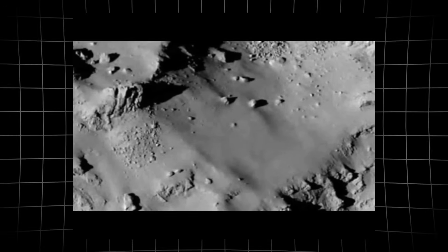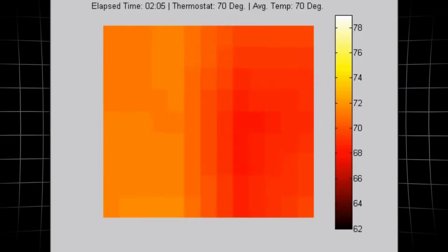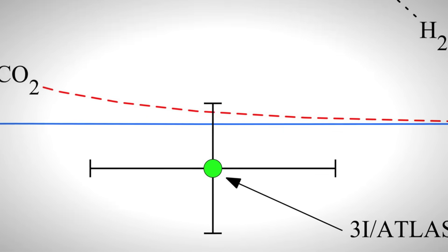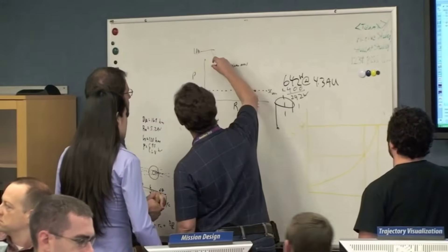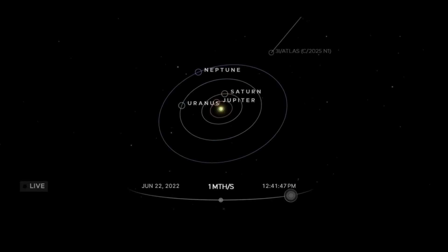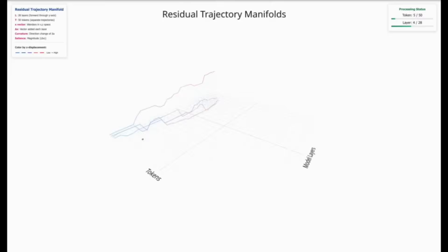In standard comet physics, non-gravitational forces like outgassing fade quickly as a comet recedes from the sun, breaking that ratio. Here, the proportionality holds. The data demand an explanation that goes beyond what images alone can show. For the Jet Propulsion Laboratory team, this is not just a curiosity. The persistence of the outward acceleration and its precise inverse square dependence forces them to consider models outside the usual playbook. The numbers are clear. Something is acting on 3I Atlas that standard comet physics does not predict. The puzzle has shifted from what the object looks like to how it moves and what unseen mechanism could be responsible.